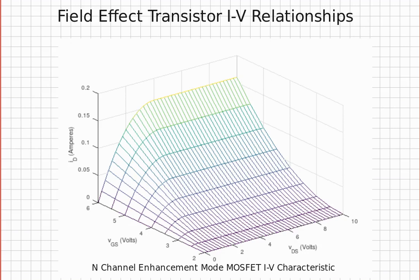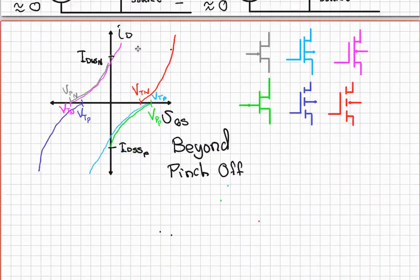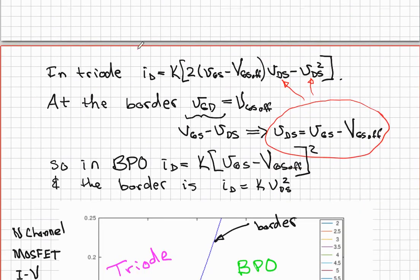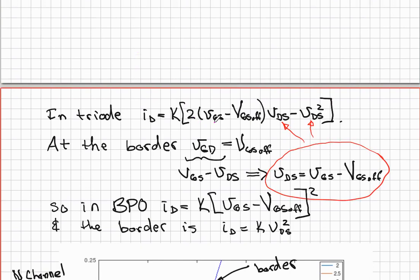The other region of operation — known as triode, linear, or ohmic — has a more complicated IV relationship given by the equation: ID equals K times the quantity (2(VGS minus VGS_off) times VDS minus VDS squared).